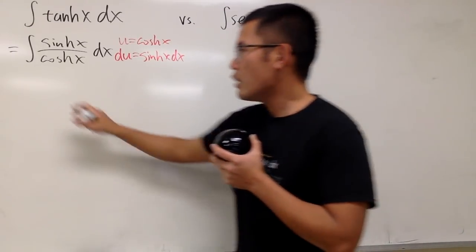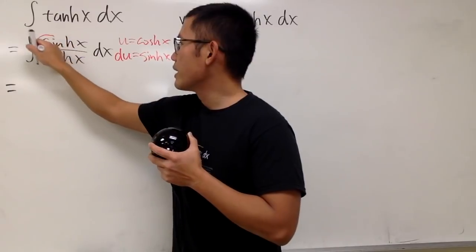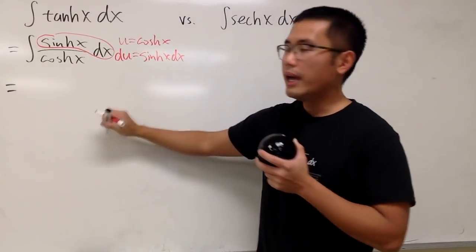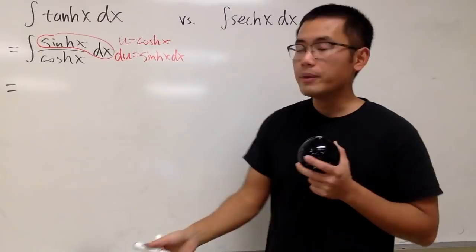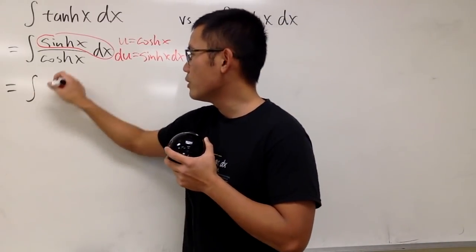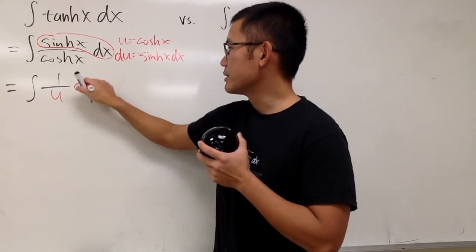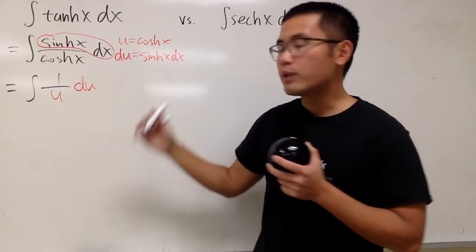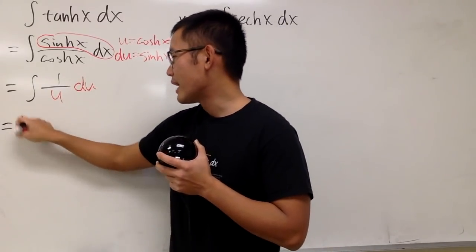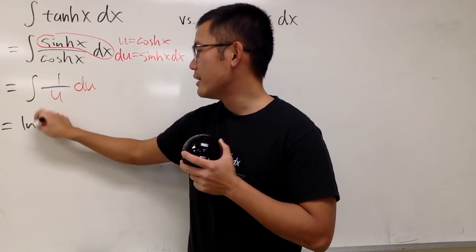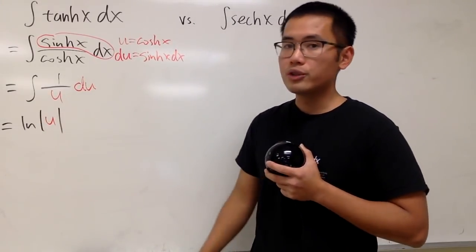Now, as we can see, this is nicely equal to our du, and on the bottom, that's the u. So we get the integral of 1 over u du. When we integrate 1 over u, we get natural log of the absolute value of u. That's pretty much it.